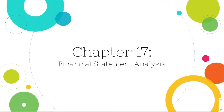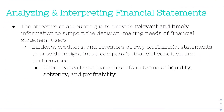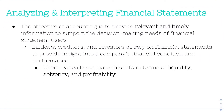Chapter 17 is Financial Statement Analysis. The objective of accounting is to provide relevant and timely information to support the decision-making needs of financial statement users — that is the definition we used all the way back in chapter 1, so taking it full circle now. Bankers, creditors, and investors all rely on financial statements to provide insight into a company's financial condition and performance. They typically evaluate this in terms of liquidity, solvency, and profitability — those are the three key terms we'll be working with throughout chapter 17.